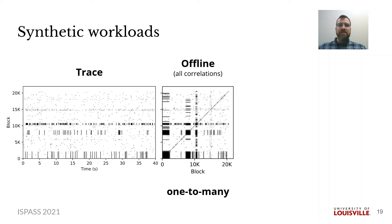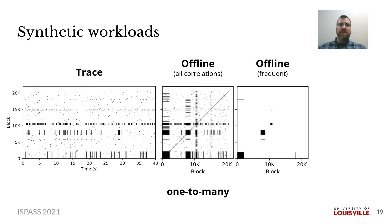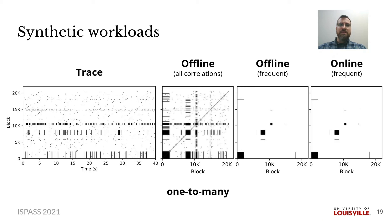Here I first want to explain our visualizations. At the left is a plot of the trace of our one-to-many synthetic workload. In the middle is every pair of blocks that occurred together in the same transaction. For each A-B pair of blocks, both points A-B and B-A are plotted. An extent appears as a square on the diagonal — the longer the extent, the larger the square. Rectangles away from the diagonal are extent correlations. Correlations closer to the diagonal have more spatial locality. Background noise creates occasional coincidences that appear as reflections and ripples. This third column is only the frequent correlations — in this case, those that appear at least 10 times. The coincidental interference from the background noise has been removed. Lastly, this is the frequent correlations from our online analysis, which has correctly identified the frequent correlations.